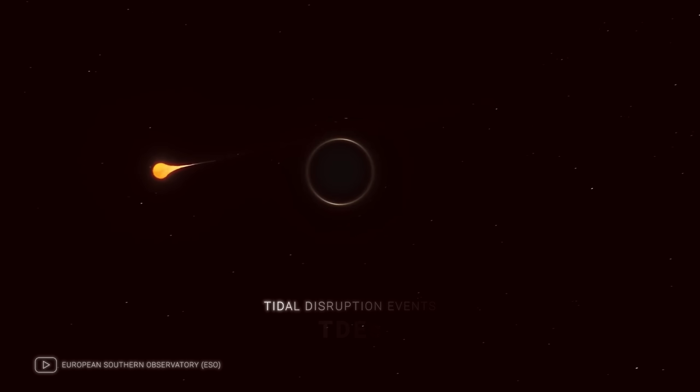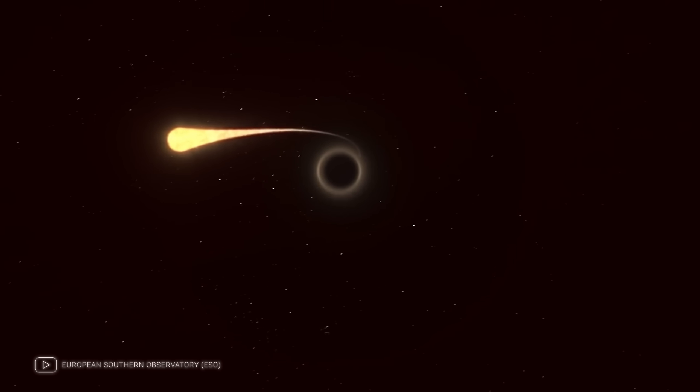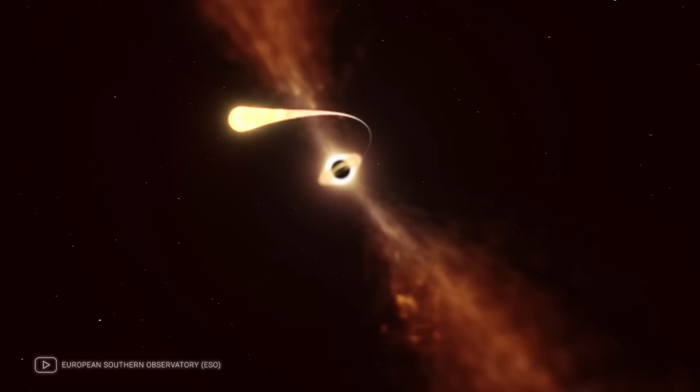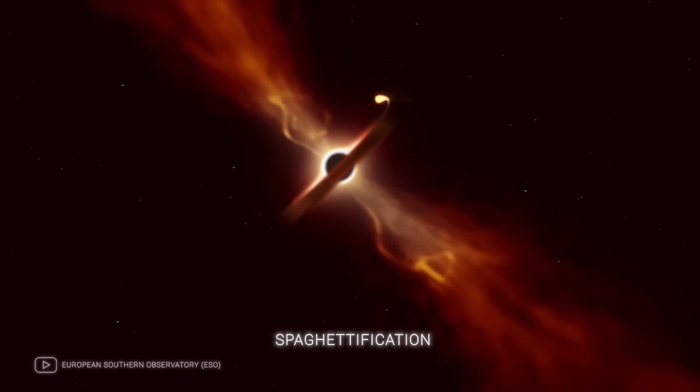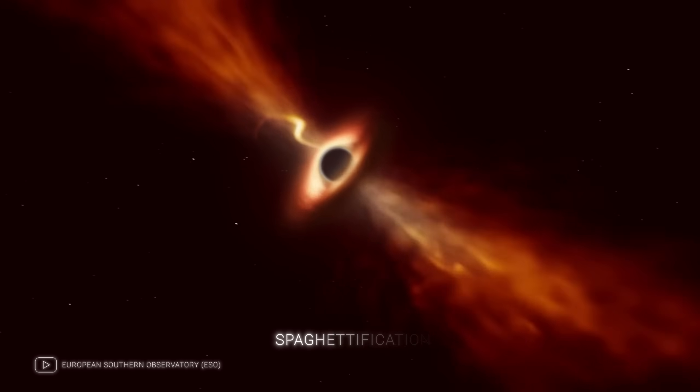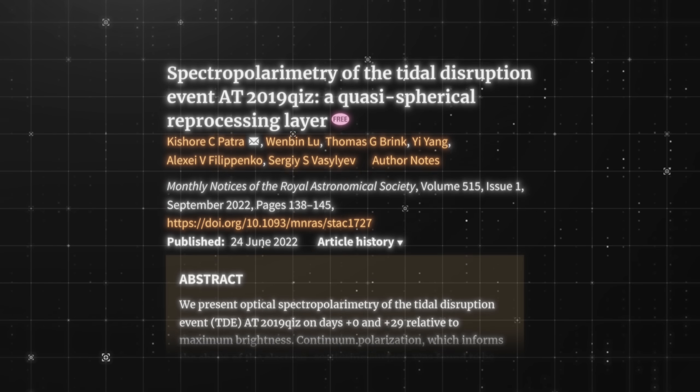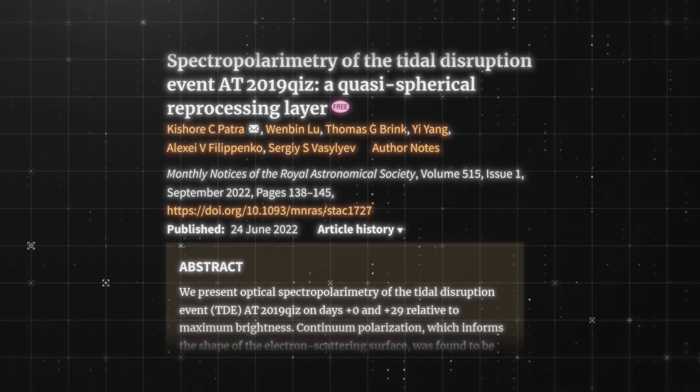black holes exert their influence through tidal disruption events or TDEs when a star gets too close to a black hole and is torn apart by its gravitational forces. This process, often called spaghettification, causes the star to stretch out and shred with some of the material falling into the black hole and the rest being ejected into space.